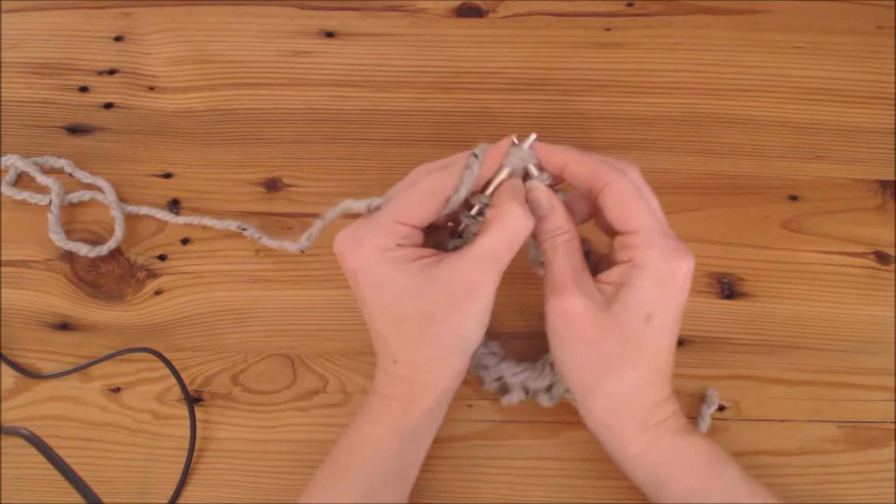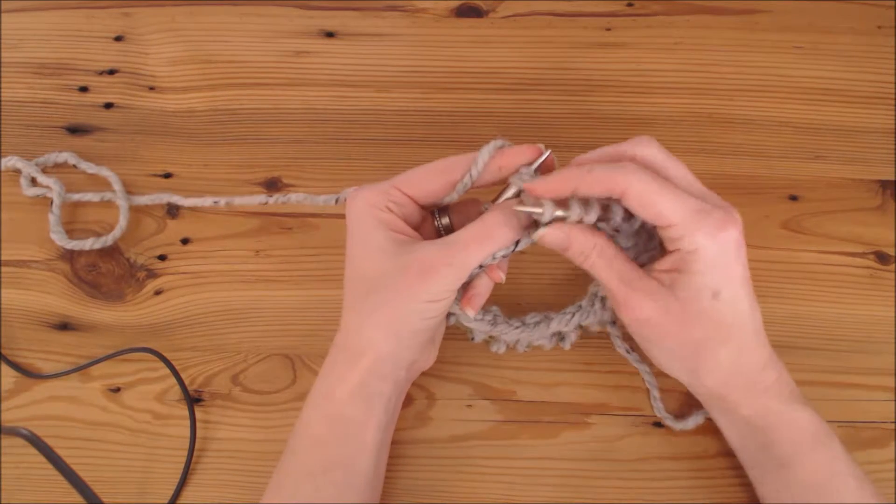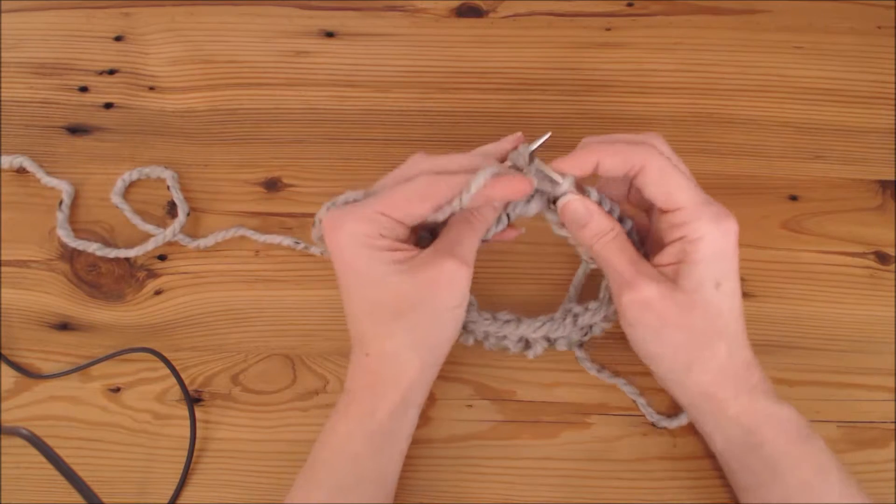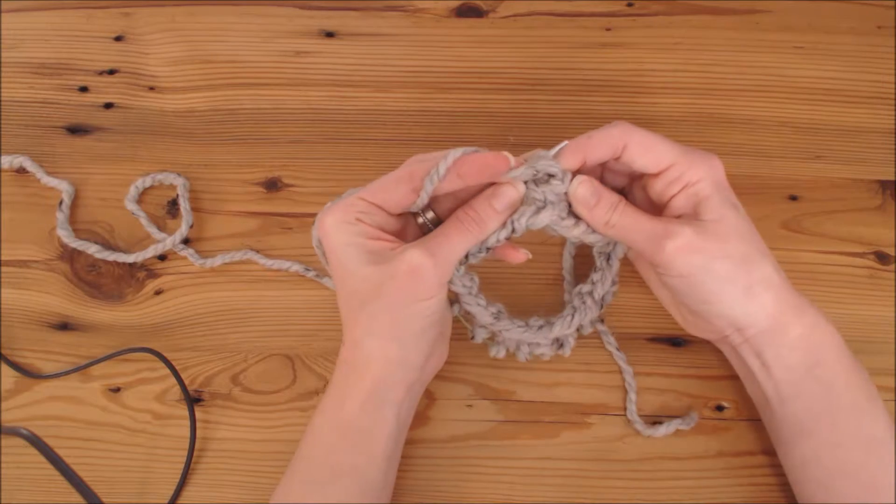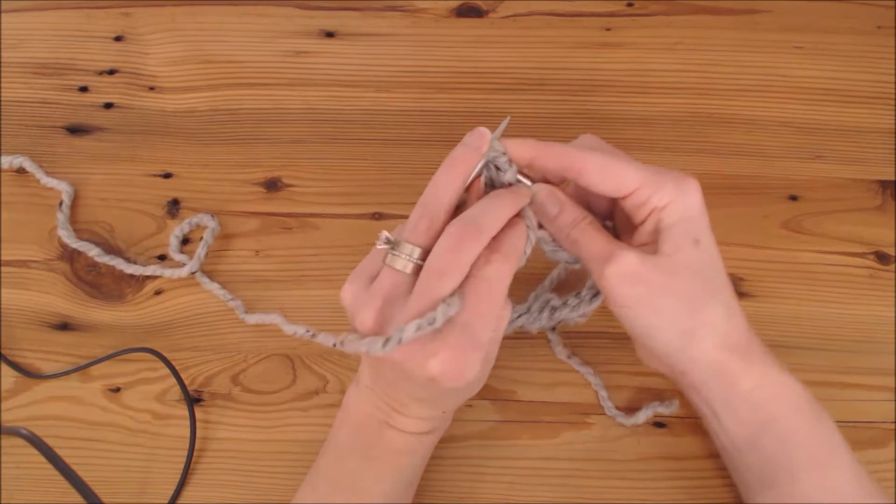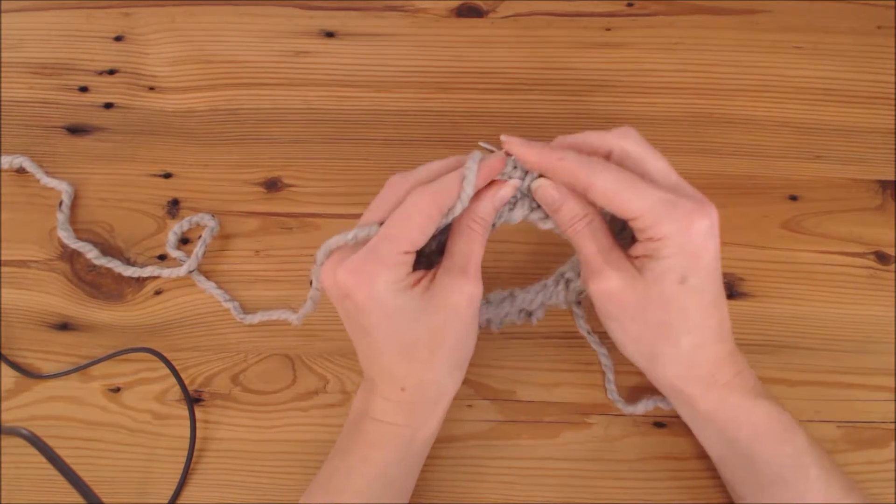So let's do it again. We're going to knit two together, and I make that a pretty big loop because it gets pretty tight. And then bring my yarn to the front and wrap it around and purl it.